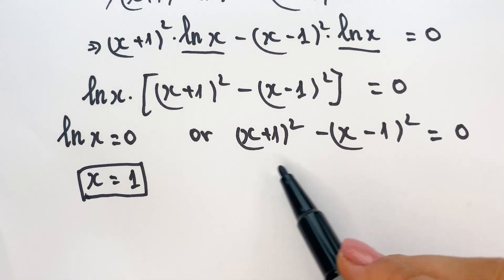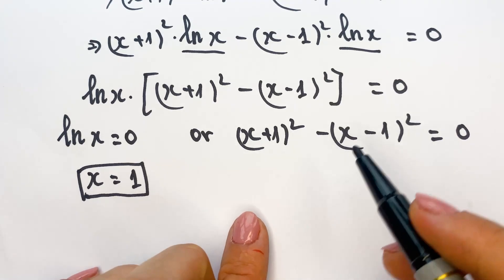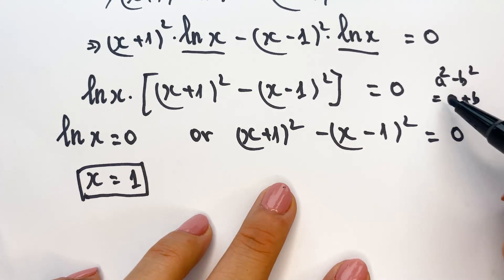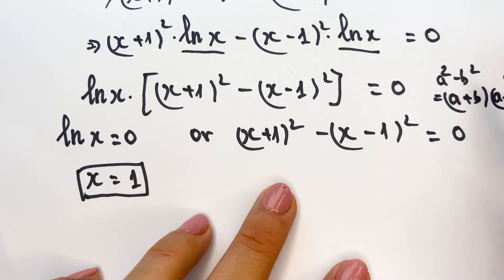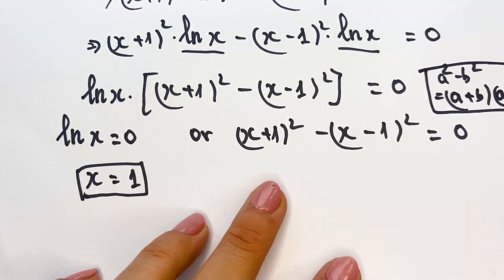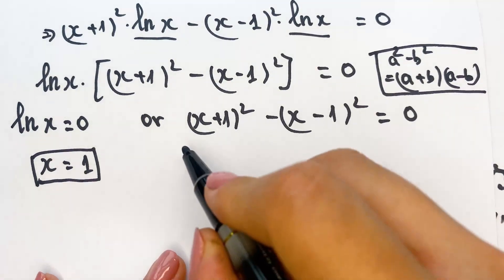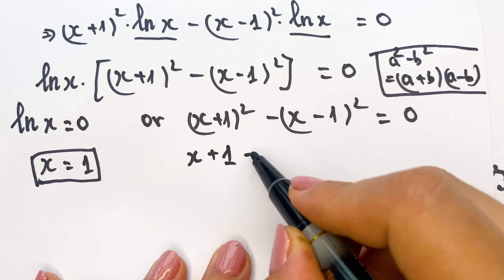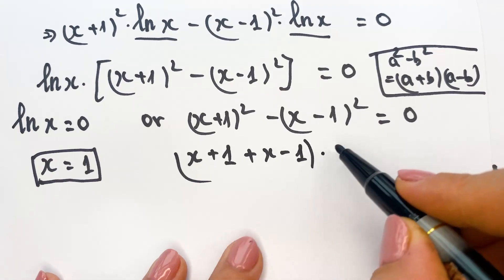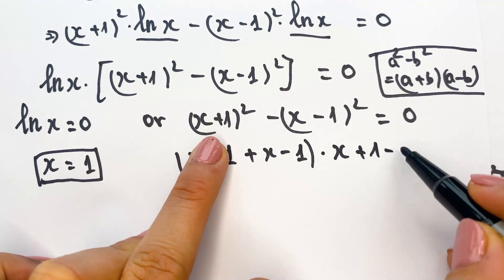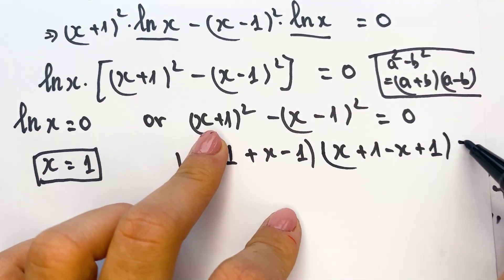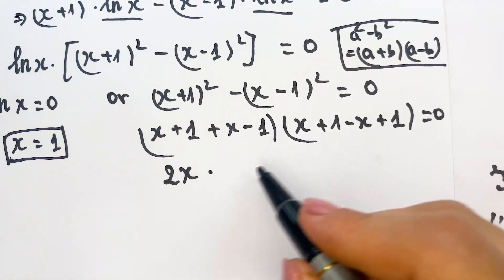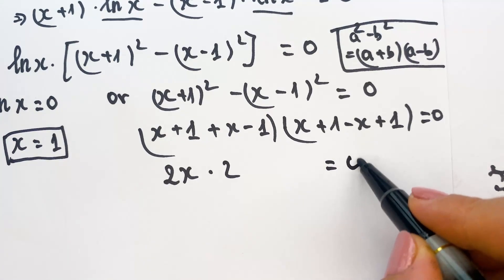Here everyone can see the identity: a² minus b² equals (a+b) times (a-b). So we can write: [(x+1) + (x-1)] times [(x+1) minus (x-1)] equals zero, which gives us 2x times 2 equals zero.